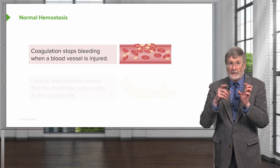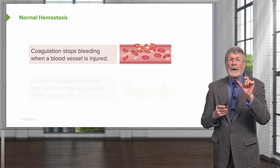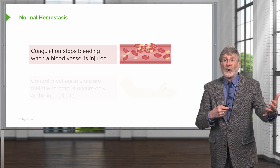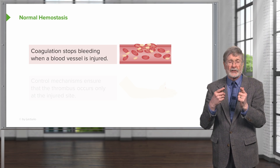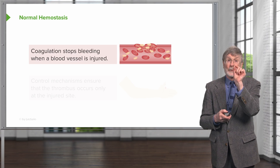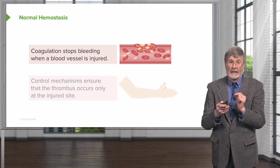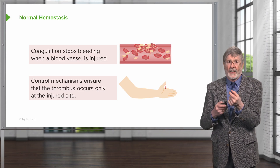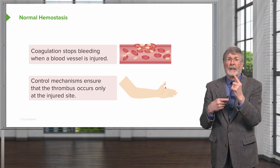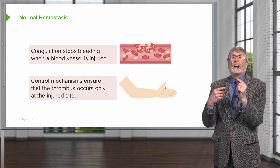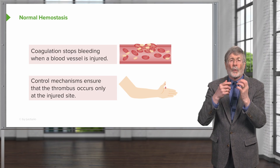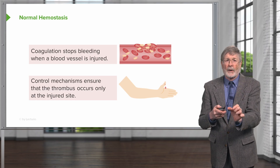When we talk about normal hemostasis — the stopping of blood flow — we are really talking about having coagulation occur when a blood vessel is injured. The rest of the time, we want blood to flow in a nice liquid form throughout the body, delivering oxygen, removing carbon dioxide, delivering nutrients, etc. So we don't want to stop it until there's injury. Conversely, we want control mechanisms that ensure that even as we're forming a thrombus, we're only forming it at that site. If I cut my finger, I don't want to bleed to death, but at the same time I don't want thrombosis to be involving my entire arm. So I need to have regulatory components that drive the thrombosis in the appropriate location.